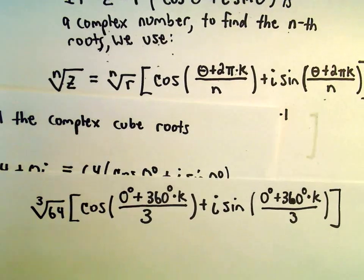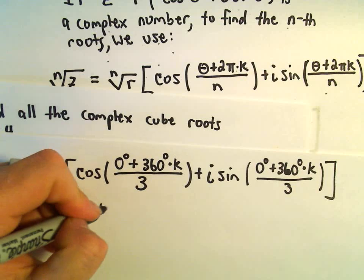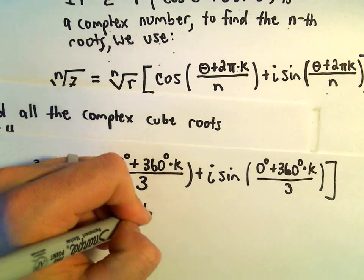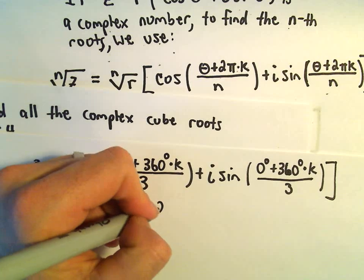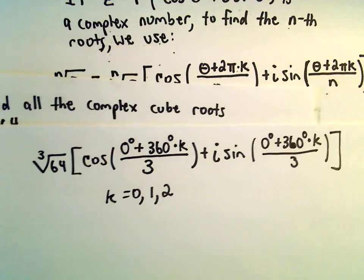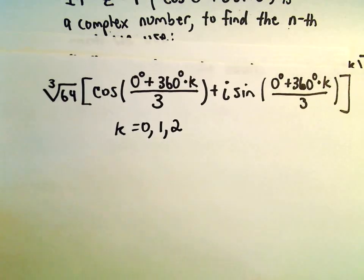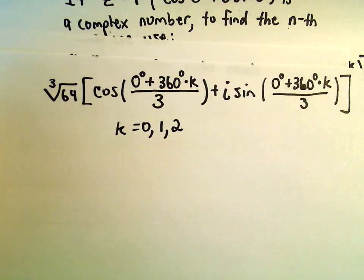And now we just have to evaluate this for k equals 0, 1. We go up to n minus 1, which would give us 2 in this case. So now we just have to simplify this formula for a few different values of k.